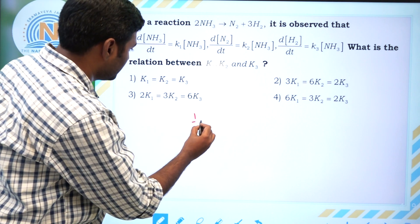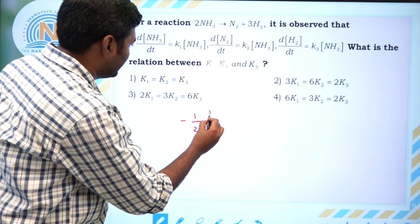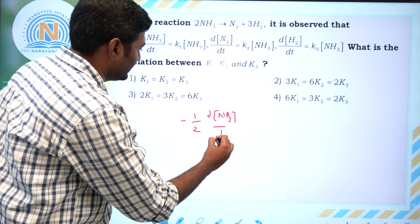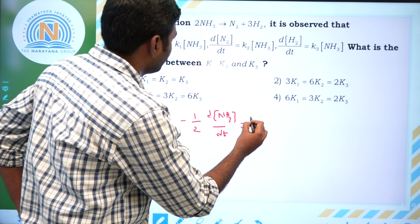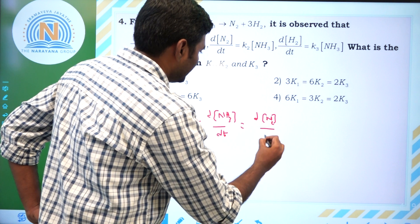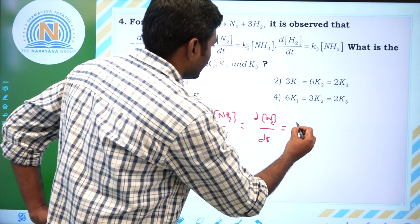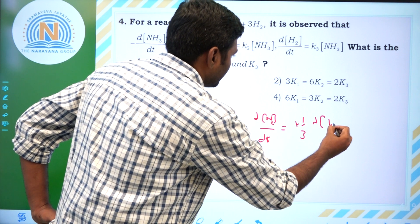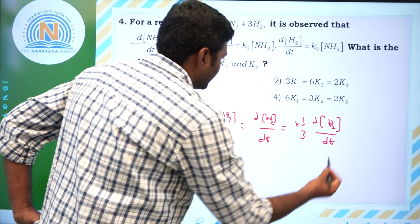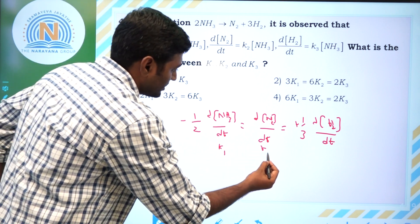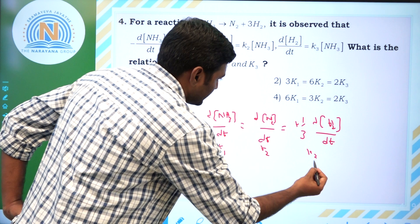Yes, if you write down the equation: minus 1/2 times d[NH3]/dt equals d[N2]/dt equals plus 1/3 times d[H2]/dt. Here, d[NH3]/dt is K1, d[N2]/dt is K2, and d[H2]/dt is K3.